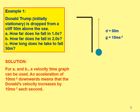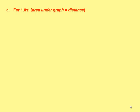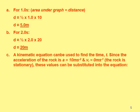For parts A and B, a velocity-time graph can be used. An acceleration of 10 meters per second squared downward means velocity increases by 10 meters per second every second. You can see this on a velocity-time graph. For one second, the area under the graph equals the distance — so distance equals half times base times height: half times one times ten equals five meters in the first second.